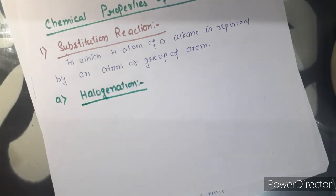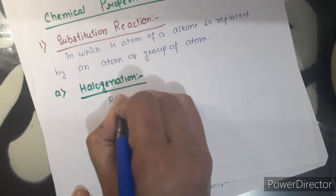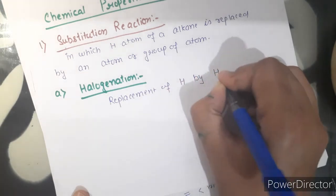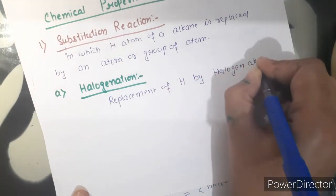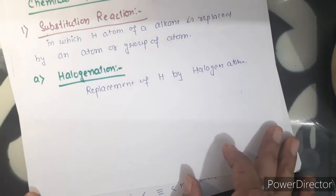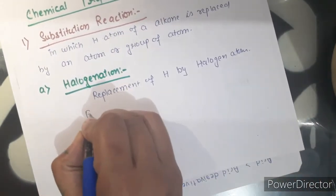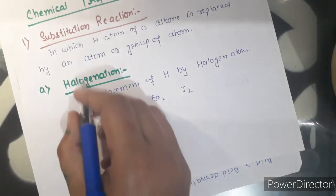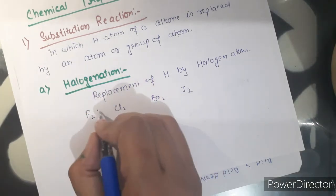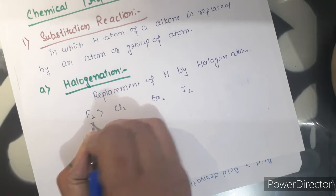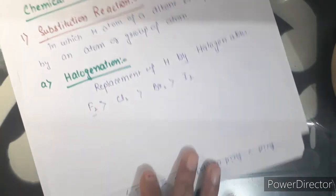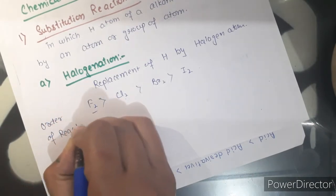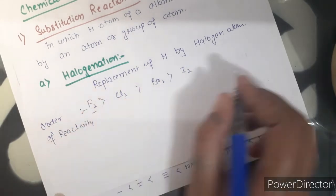First type is halogenation — replacement of hydrogen by a halogen atom. The halogens are fluorine, chlorine, bromine, and iodine. The reactivity of halogens towards alkanes is: fluorine is more reactive than chlorine, than bromine, than iodine. So the order of reactivity is: fluorine > chlorine > bromine > iodine.